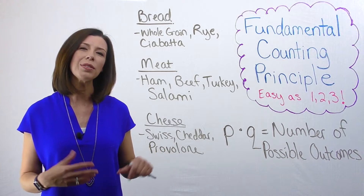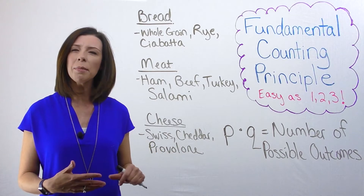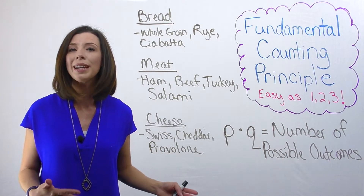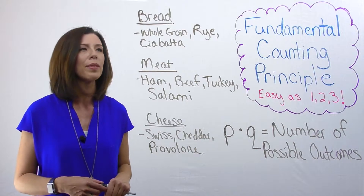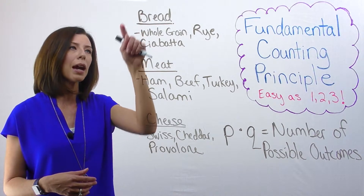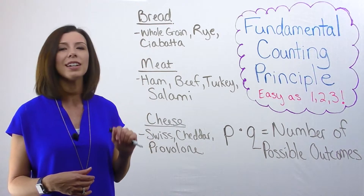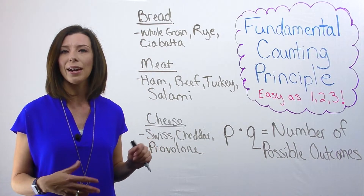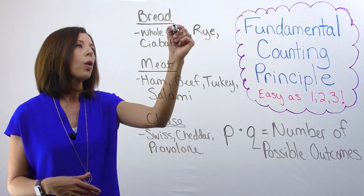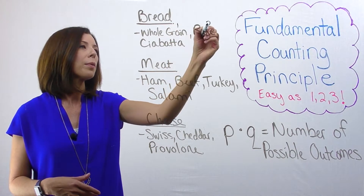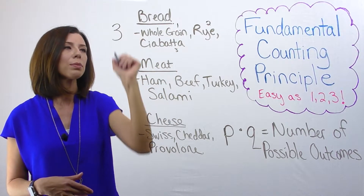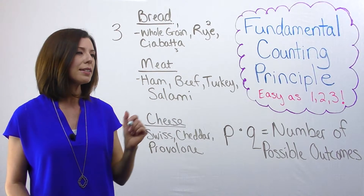Really, when you think about it, the fundamental counting principle is just a special type of combinations problem. So let's look and see how many options we have. In the bread category, I can see that I have whole grain, rye, and ciabatta — so that's three possibilities.